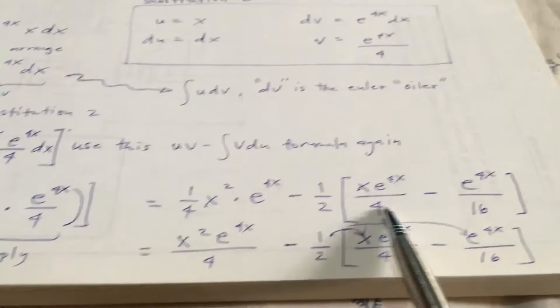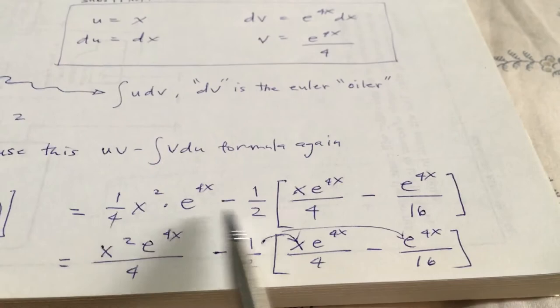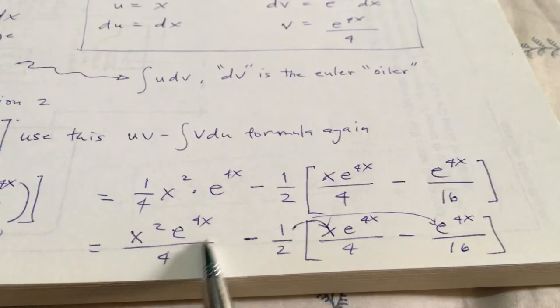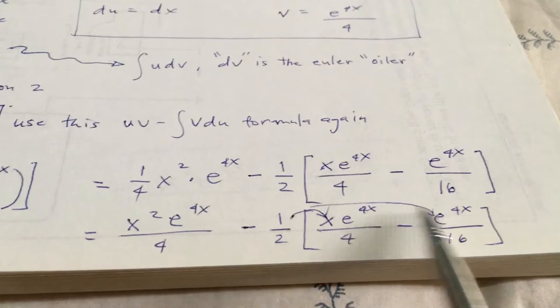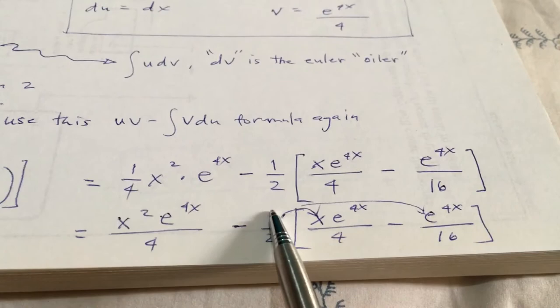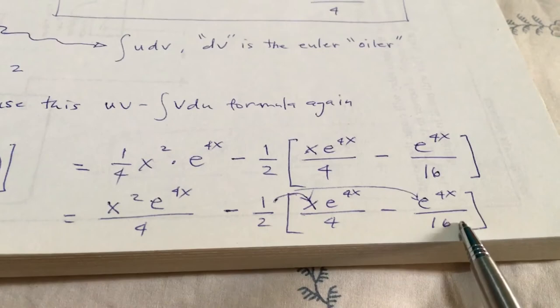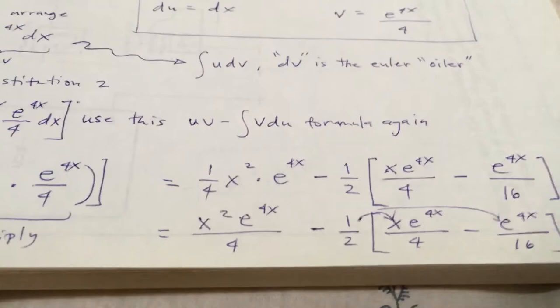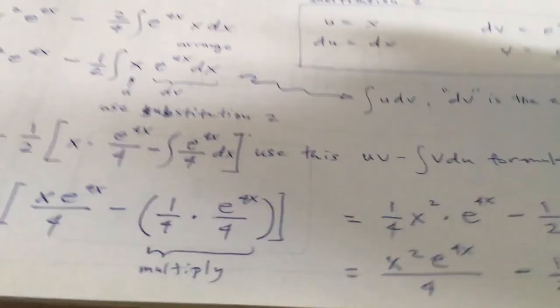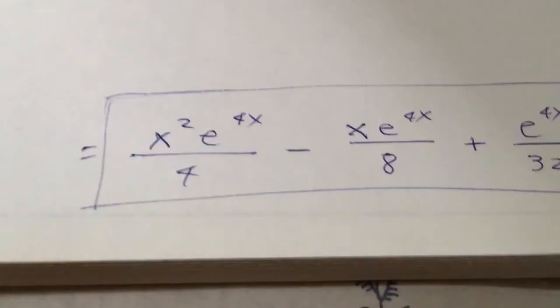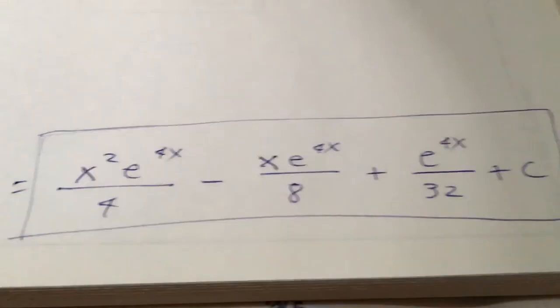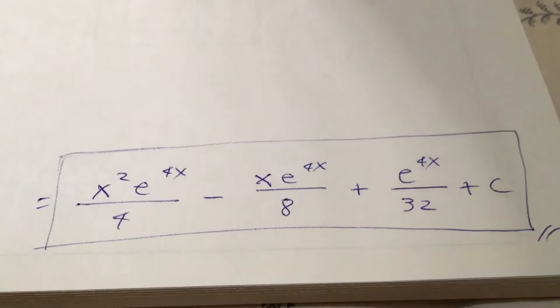After multiplying, this is the result. Copy this once again and construct the expression, arranging it so we won't be confused. Distribute 1 half: times x times e raised to the 4x over 4, and 1 half times e raised to the 4x over 16. Don't forget to include the negative — a negative times a negative gives a positive. And this is the final answer. I hope this makes sense. Thanks for watching.